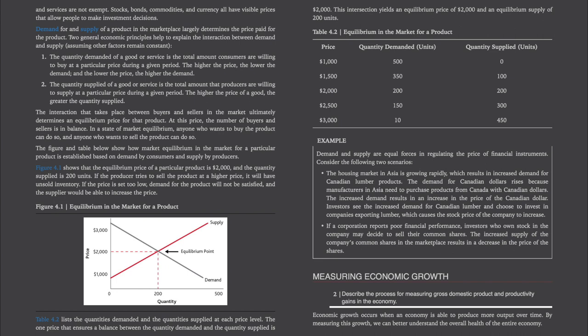Table 4-2 lists the quantities demanded and the quantities supplied at each price level — you can check that out in the e-book. Demand and supply are equal forces in regulating the price of financial instruments. Consider the following two scenarios.